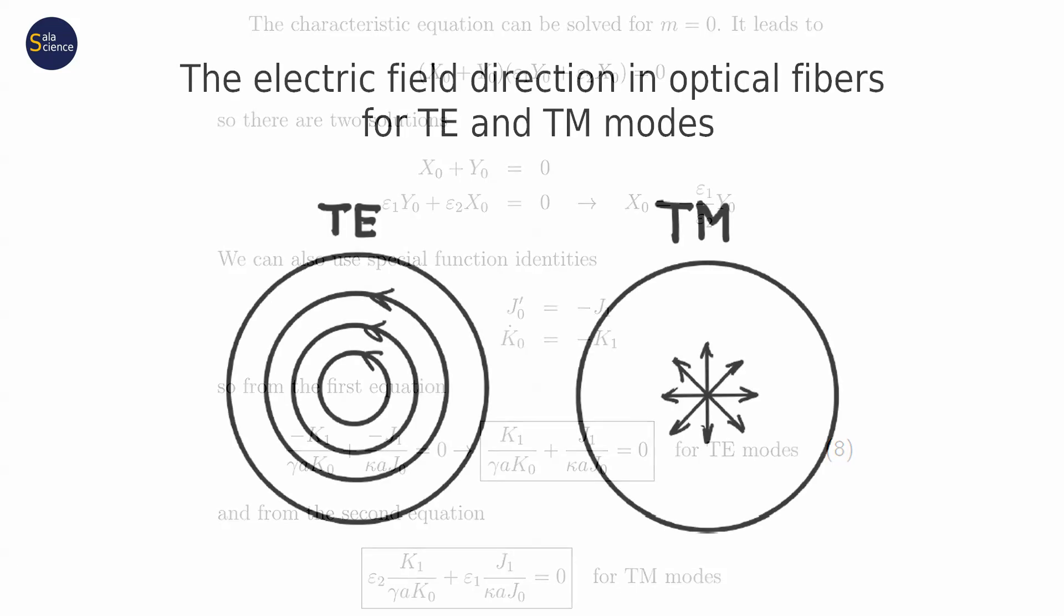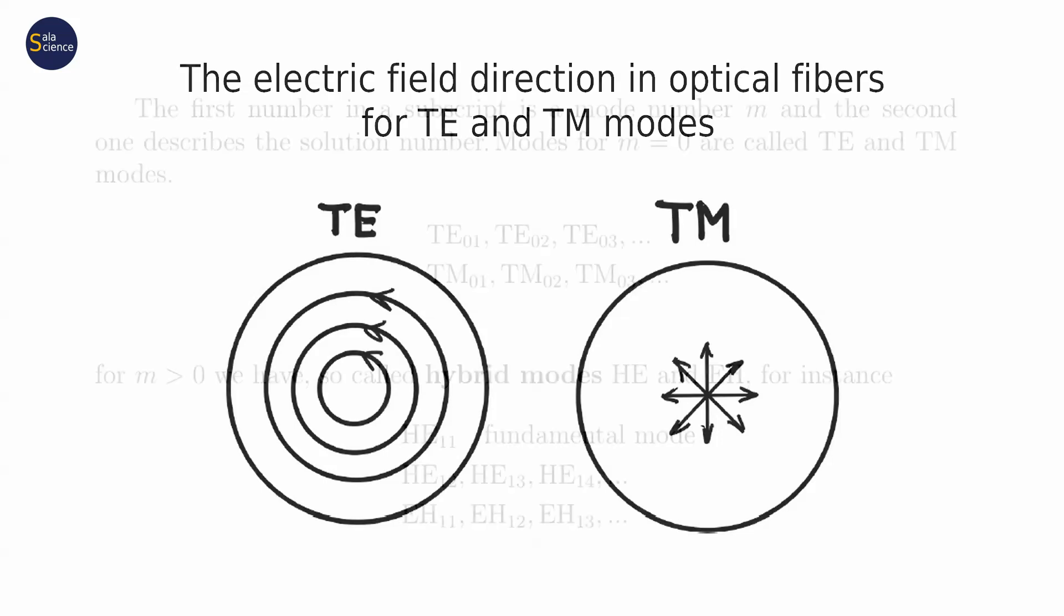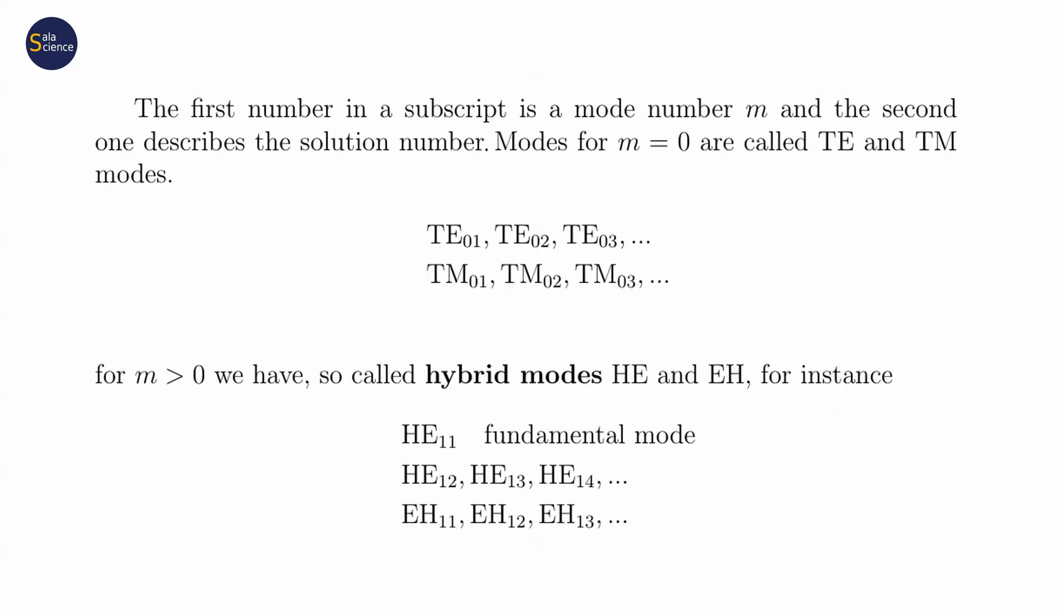When we take a look at the transverse components of the electric field of such modes, it appears that transverse electric modes have only tangential component, and transverse magnetic modes only the radial component of the electric field. TE and TM modes have only three field components.